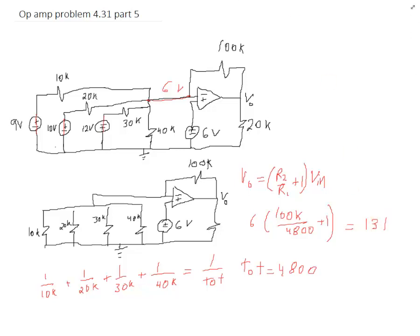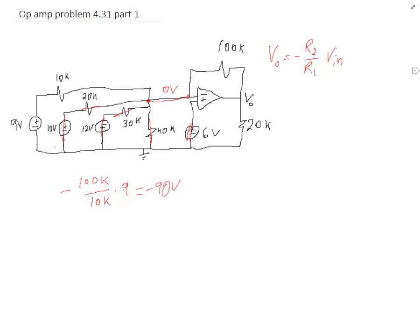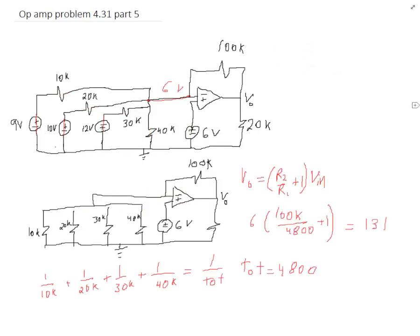So now we can go back and add up all the voltages from all the different voltage sources. So that's negative 90 volts, negative 50, positive 40, positive 131. We'll add all those up right here. So negative 90, negative 50, 40, 131. We add those together, we get 31 volts. And that's our answer for V out.